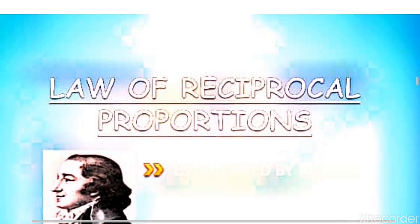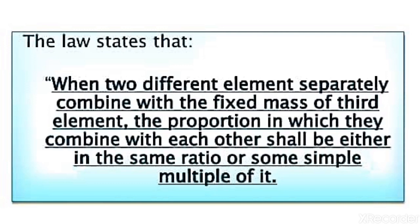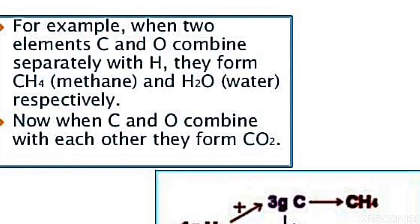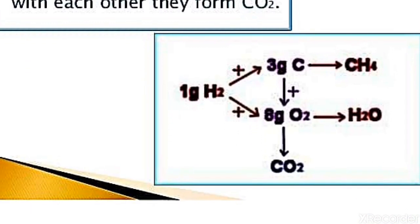The fourth law is the Law of Reciprocal Proportion. When two different elements separately combine with a fixed mass of a third element, the ratio in which they combine with each other is also a simple ratio. For example, carbon and oxygen combine separately with fixed mass of hydrogen: carbon combines with hydrogen to give methane, and oxygen combines with hydrogen to give water. With 1 gram hydrogen, 3 grams of carbon and 8 grams of oxygen are used. So 3 grams of carbon will react with 8 grams of oxygen to give carbon dioxide.